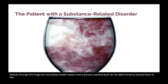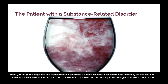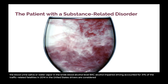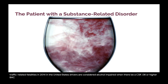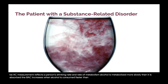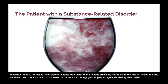A person's alcohol level can be determined by several tests of the blood, urine, saliva, or water vapor in the breath. Blood alcohol level (BAC): alcohol-impaired driving accounted for 31 percent of traffic-related fatalities in 2014 in the United States. Drivers are considered alcohol-impaired when their BACs are 0.08 or higher. BAC measurement reflects a person's drinking rate and rate of metabolism. The rate at which the body absorbs and metabolizes alcohol is based on factors such as age, gender, percentage of fatty tissue in the body, and whether food is also being metabolized.